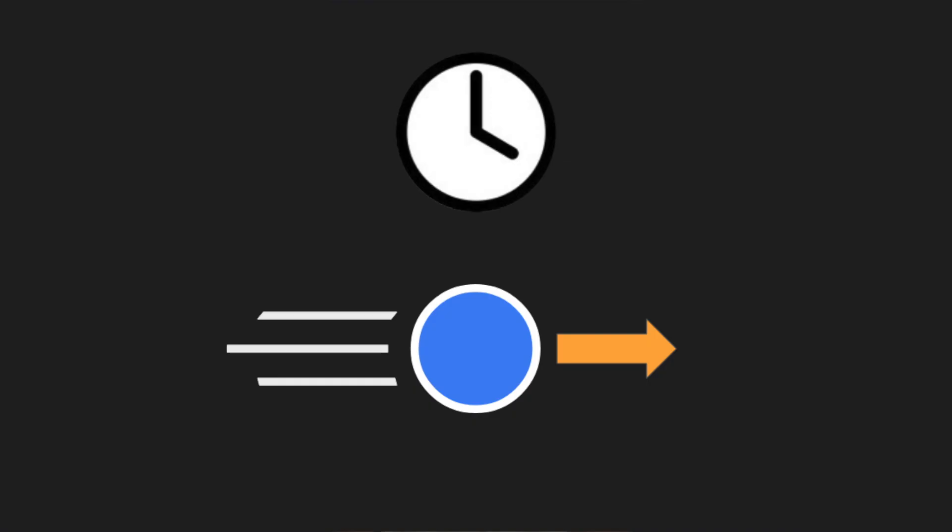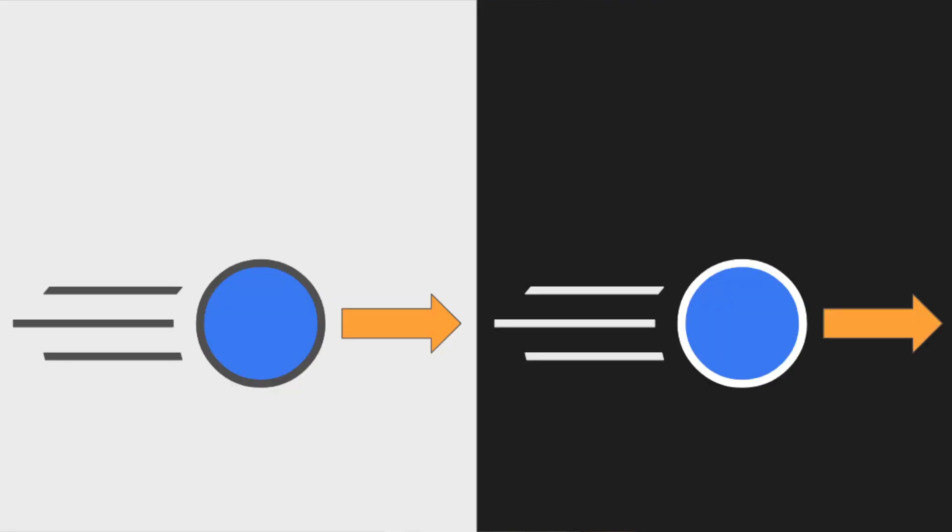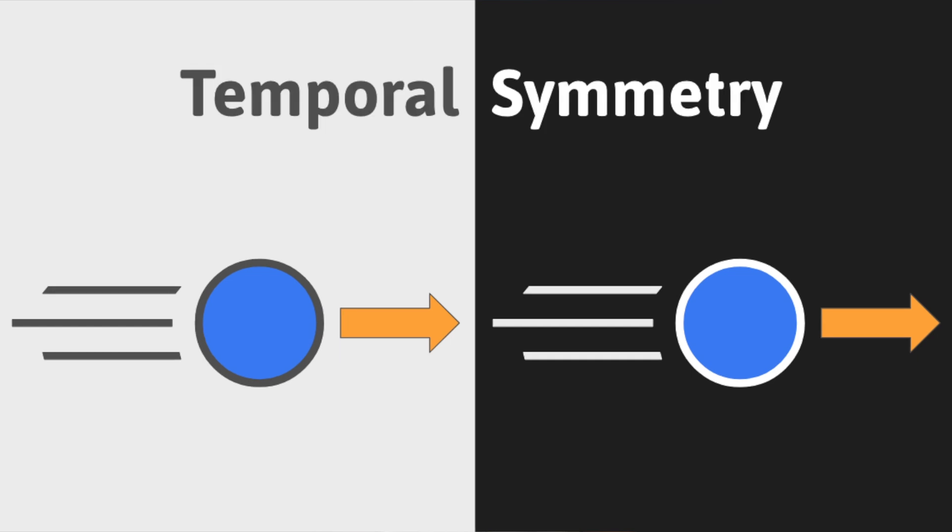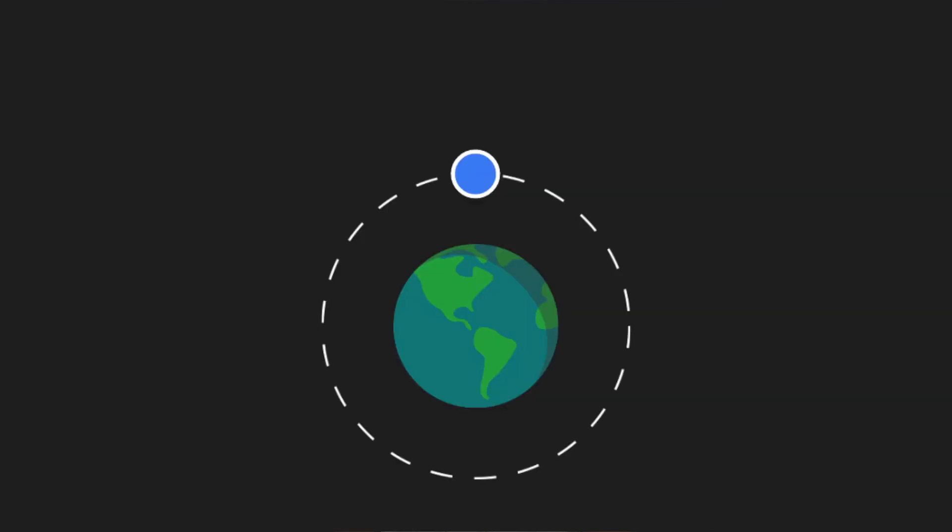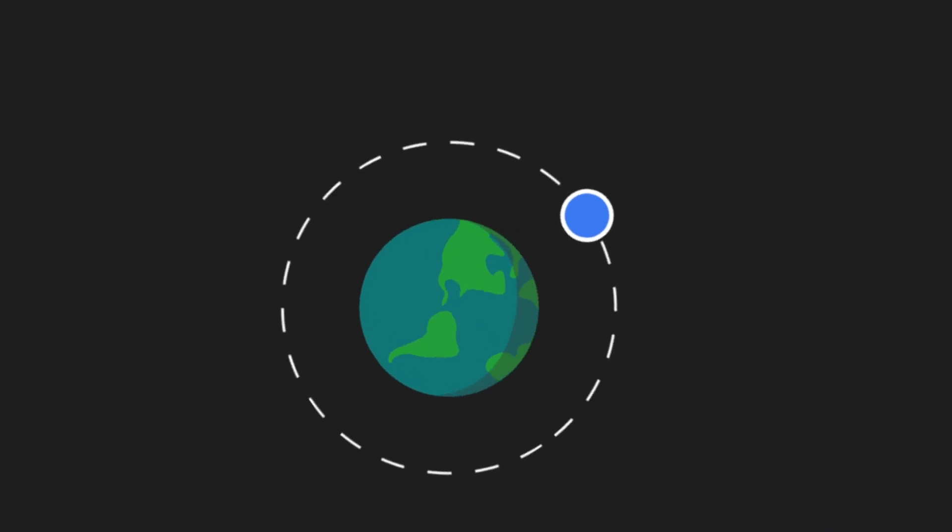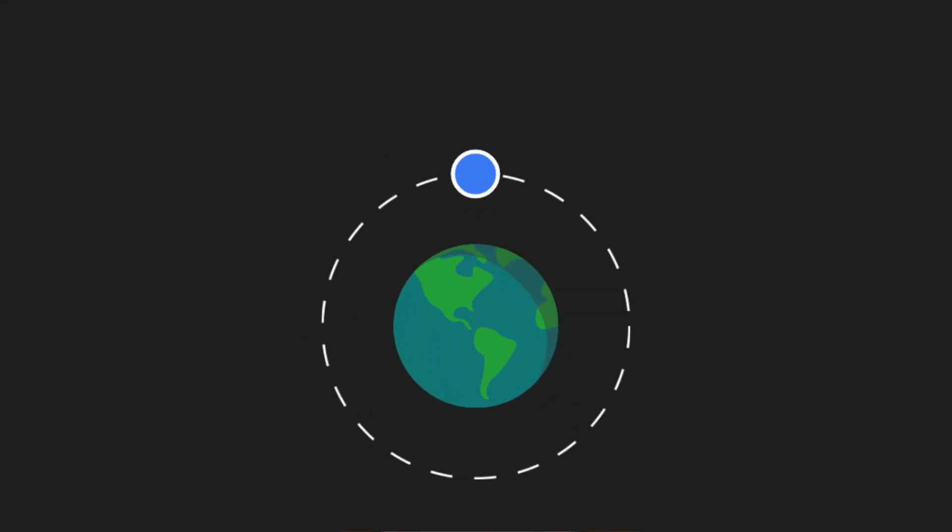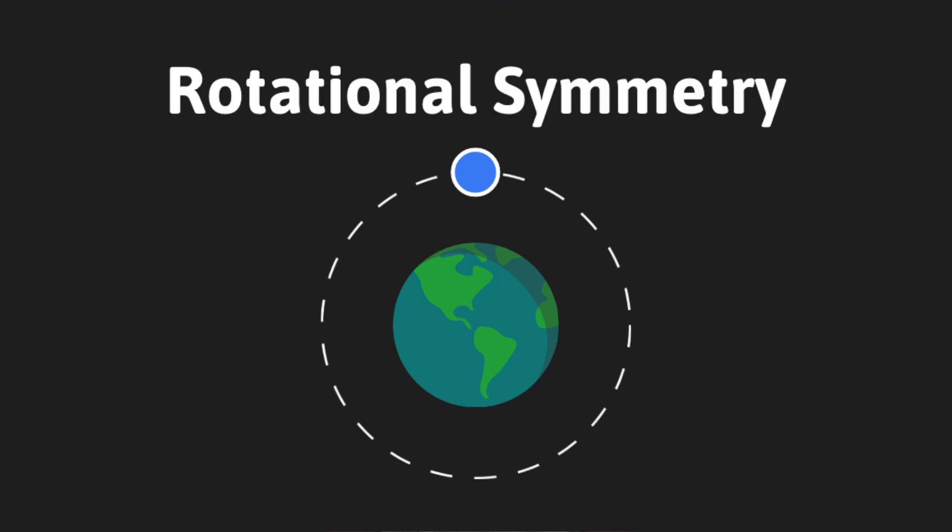What if instead of space, we changed time? Does the movement of the ball depend on when it moves? Would it behave differently during the day or night? No. This means it has temporal symmetry. Now let's say the ball is orbiting the earth. It doesn't matter how much we rotate the system by. It will still look and behave in the same way. This is rotational symmetry.